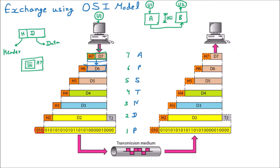The presentation layer also adds its header. Think of it as the next person putting another envelope on top. H6 is applied - one more envelope. Seven layers means seven envelopes will be applied, making the data more secure. This complete data is now becoming D5 for the next layer.